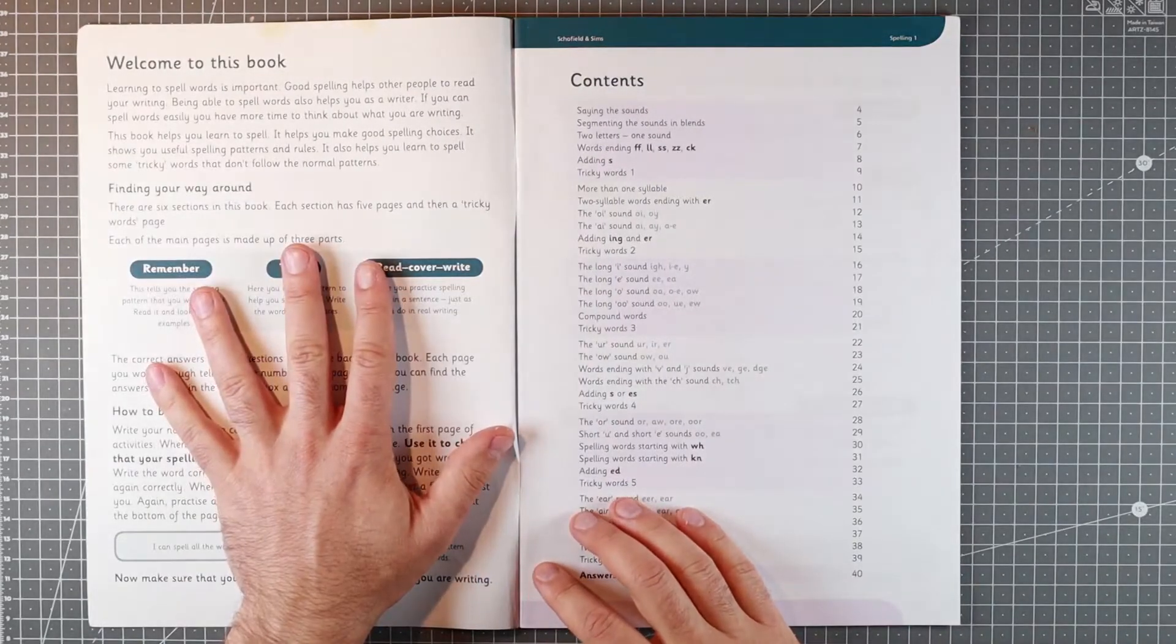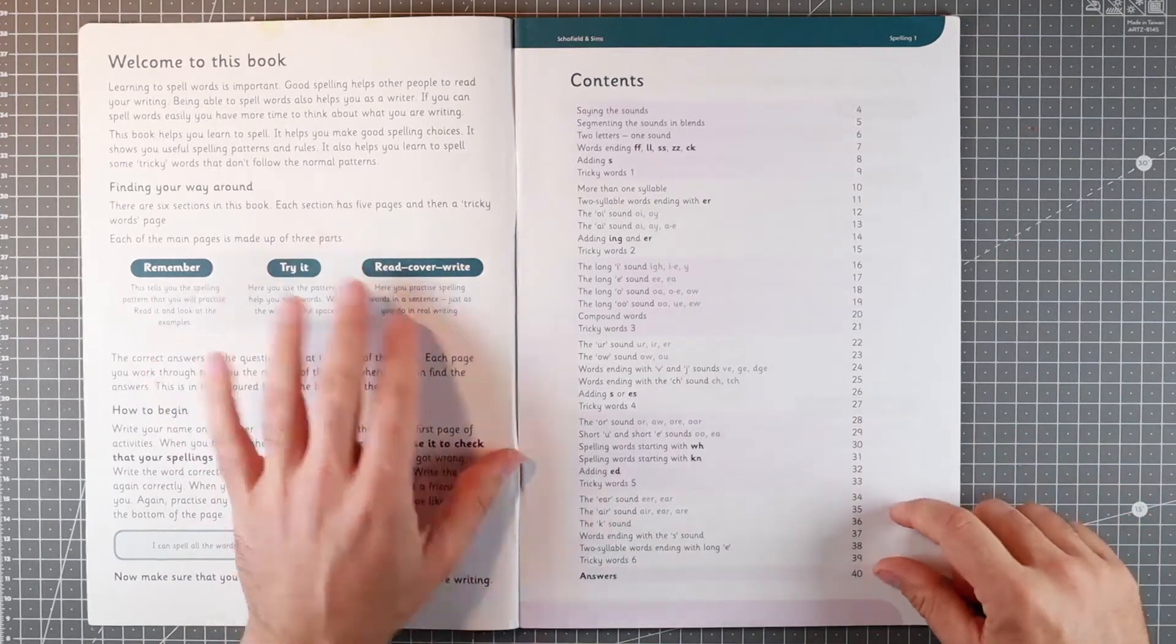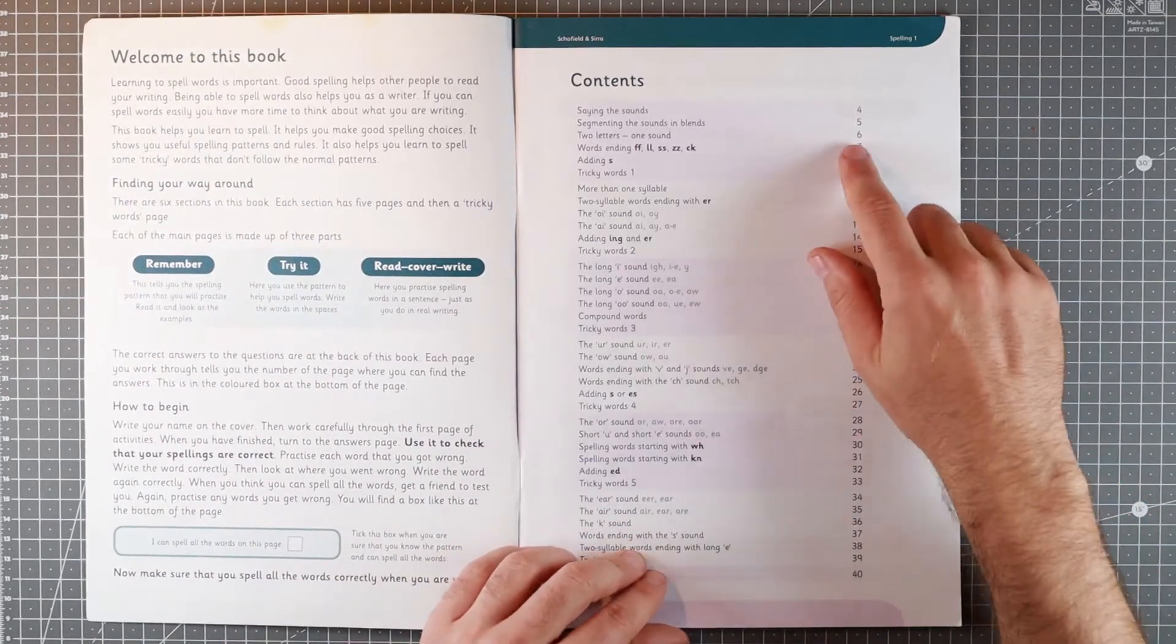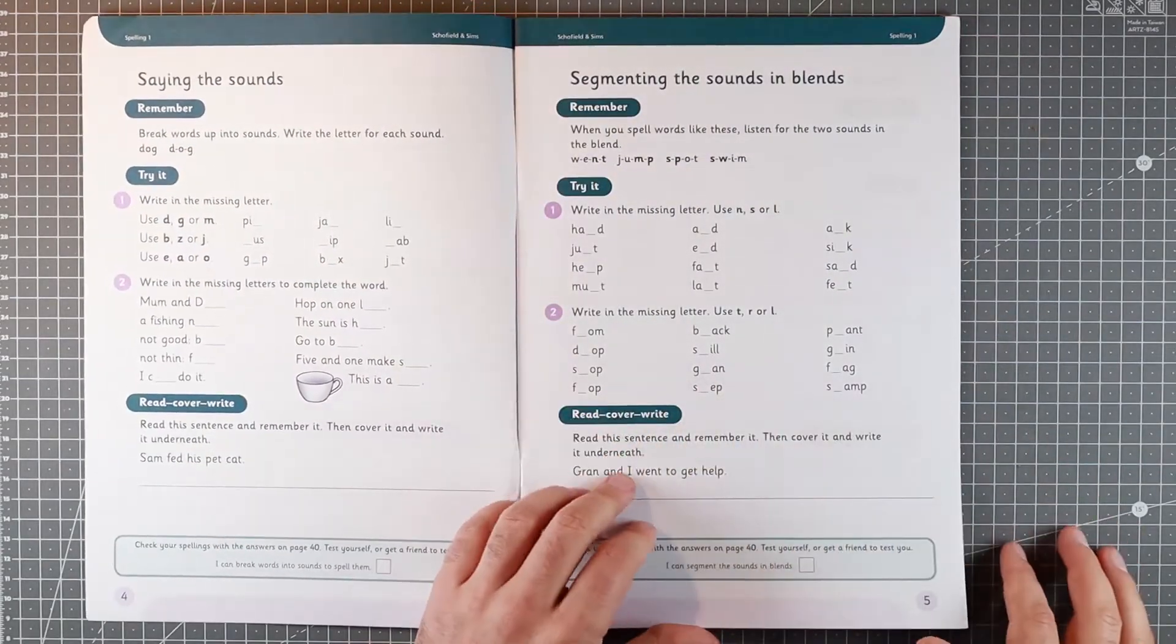Instructions for parents on the inside of the jacket. Six sections to the book, each covering different combinations of letters. The exercises follow very similar form throughout.